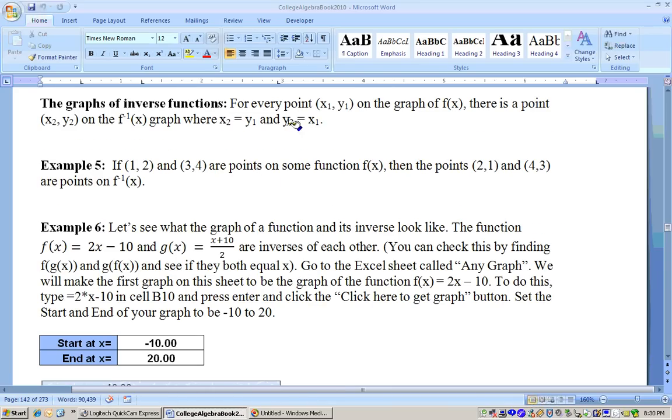Here's a little fact about inverse functions. Since we had to switch the x and y's to get the inverse function, then if there's a point on the original function, x1, y1, then on the inverse function, there's a point x2, y2, where x2 is this y and y2 is that x. That's confusing, so let me show you what I mean. If these points, 1, 2, and 3, 4, are points on the original function, then on the inverse function, there are points 2, 1, 4, 3 on the inverse function.